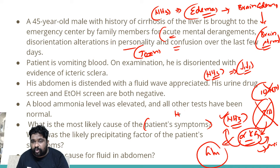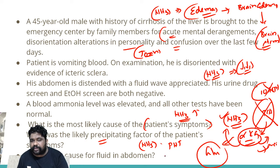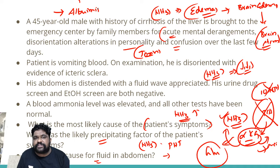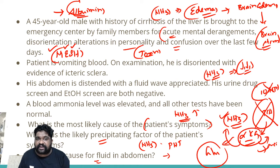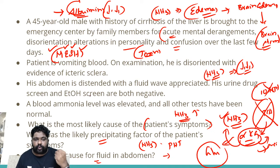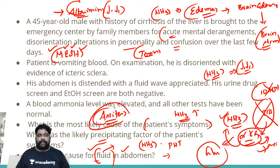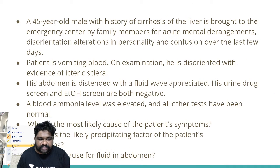The most likely cause of the patient's symptoms is ammonia excess and toxin excess, precipitated by portal hypertension and abnormal blood pressure changes in the portal circulation. As for the fluid in the abdomen: when the liver is failing, it can no longer synthesize albumin adequately. Without albumin in the blood, water cannot be retained, so fluid moves into the interstitial area — causing ascites, which can be detected as a fluid wave (ballottable).